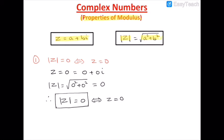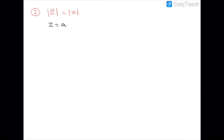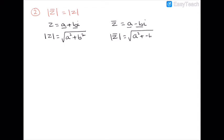Our next property is: the modulus of the conjugate of z equals the modulus of z. For z = a + bi, its conjugate is a − bi. Taking the modulus of both, we get √(a² + b²) for z, and for the conjugate we get √(a² + (−b)²) = √(a² + b²), which equals |z|. So |z̄| = |z|.